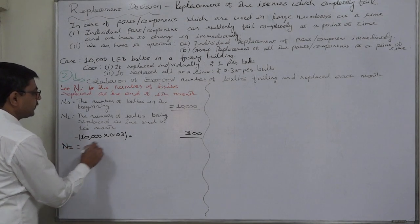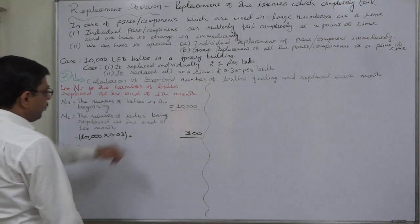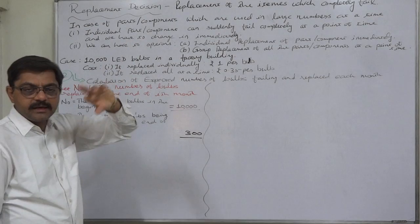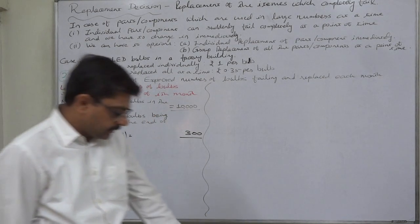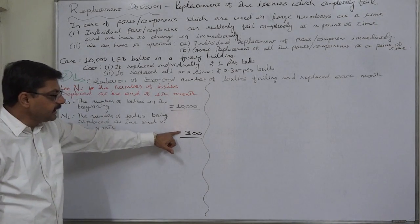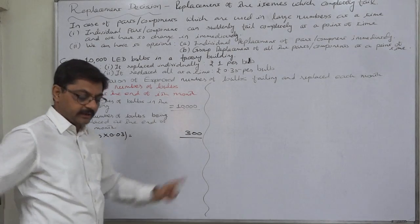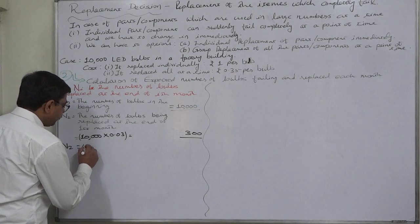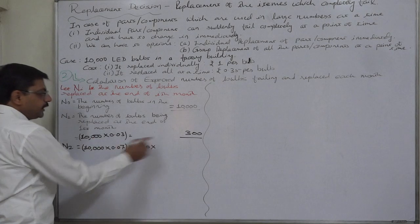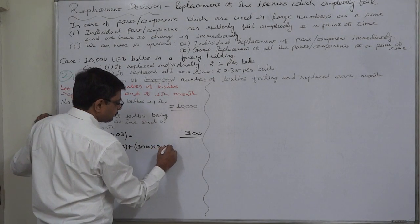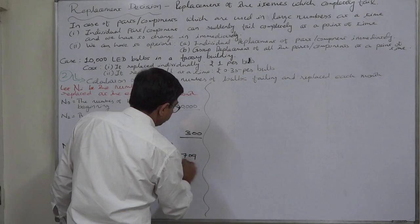N2 is the number of bulbs being replaced at the end of the second month. This is interesting: out of the 10,000 original bulbs, we expect a 0.07 probability of failure — that is 7 percent. But for the 300 bulbs replaced in the first month, this is their first month, so we also expect 3 percent of those 300 to fail. So in the second month we replace 7 percent of the original 10,000 plus 3 percent of the 300, giving 700 plus 9, which equals 709.